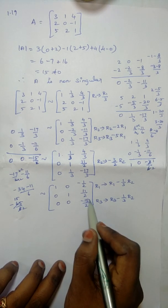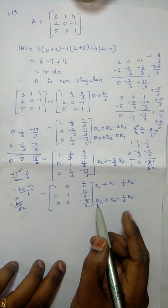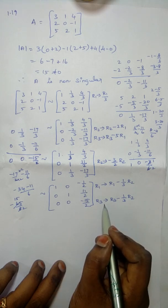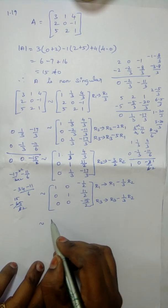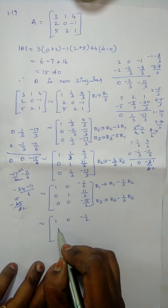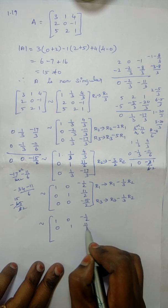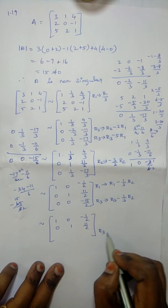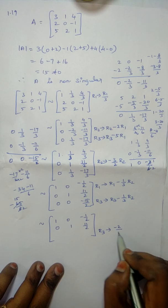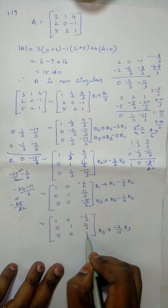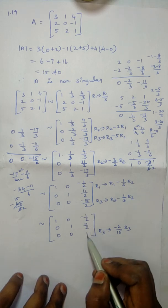Element A33 gives us the pivot. R1 is [1, 0, minus 1/2], R2 is [0, 1, 11/2], and after calculation R3 becomes [0, 0, 1] with the element minus 2/15 used in the process. This gives us the leading 1 in position (3,3).